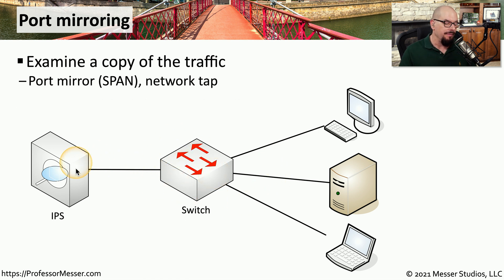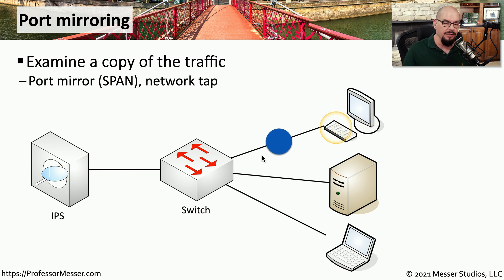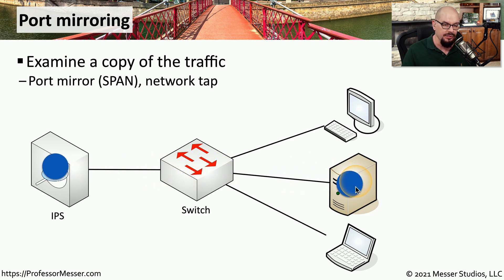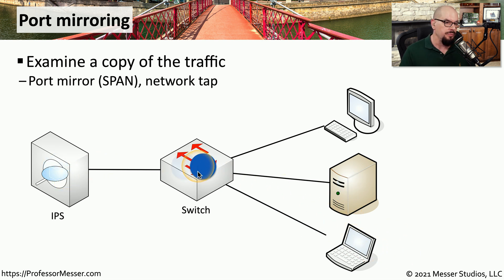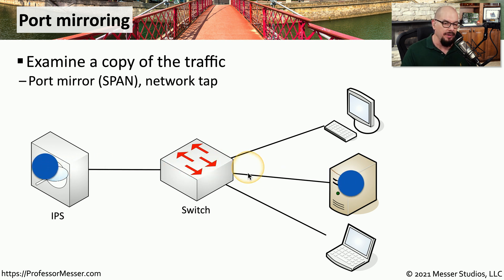Here's a scenario where we have an IPS being used in more of an offline mode, and we've set up a port mirror from the switch to redirect traffic to the IPS. If a device is going to communicate to the server, once it hits the switch, a copy of that information will be sent to the server and another copy will be sent to the IPS. If another device communicates on the network, that Switch Port Analyzer or port mirror will also create a copy of that traffic, send a copy to the destination station, and another copy to the IPS.